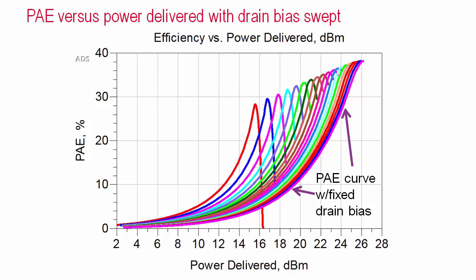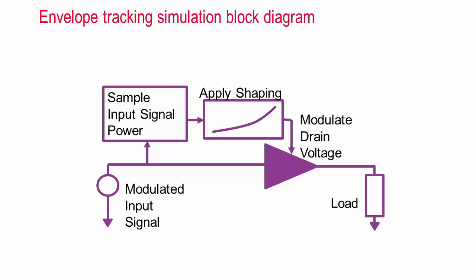I'm going to show several ways of simulating envelope tracking. These assume that you have a nonlinear model of your power amplifier. This could be measured bias-dependent X parameters, a schematic that uses nonlinear FET or BJT models, or some other behavioral model.